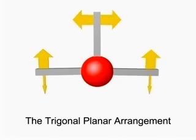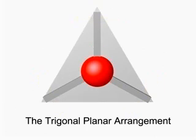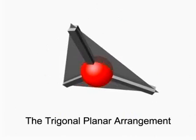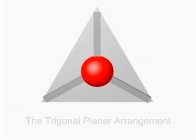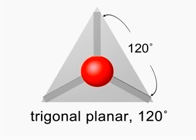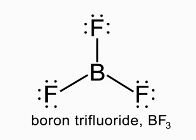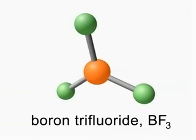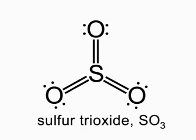Three negative groups attached to a central atom attain minimal repulsions in the trigonal planar arrangement, which has an ideal bond angle of 120 degrees. We observe this angle in molecules with three identical groups, such as boron trifluoride and sulfur trioxide.